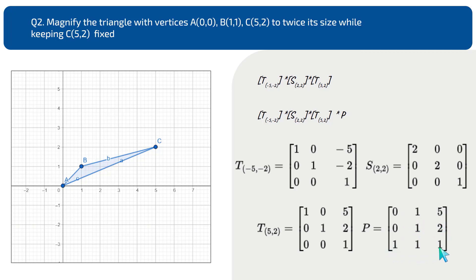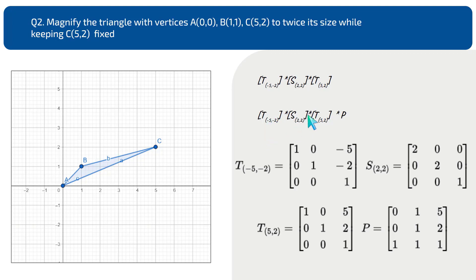The homogeneous form is used as discussed in previous videos. We must multiply these three matrices without changing their order, as changing the order would completely change the problem. All three matrices are 3×3, so their inner dimensions match and multiplication is valid.